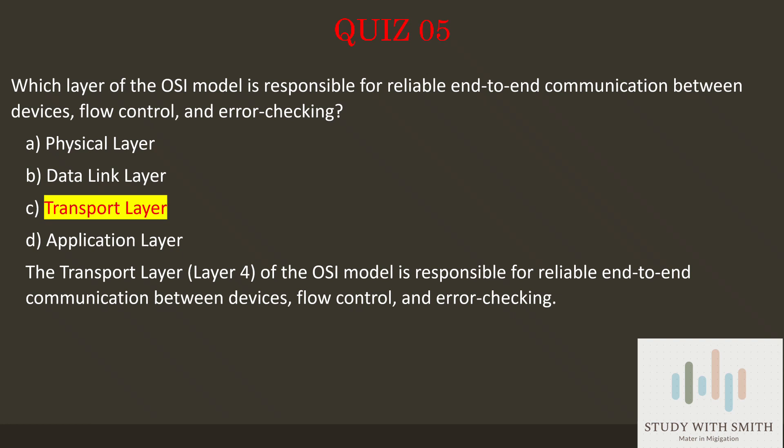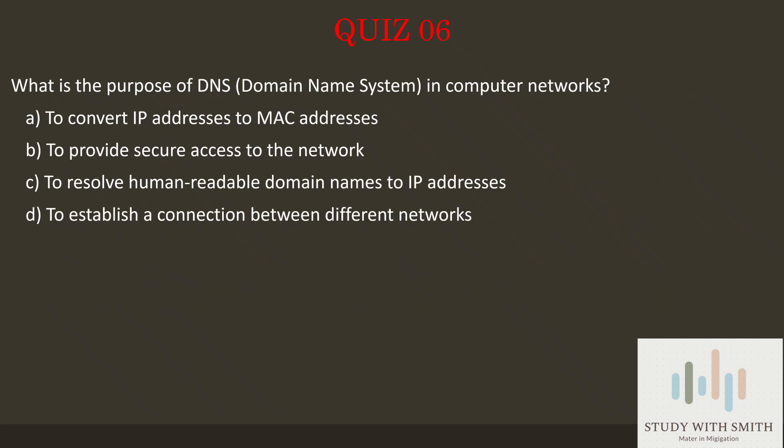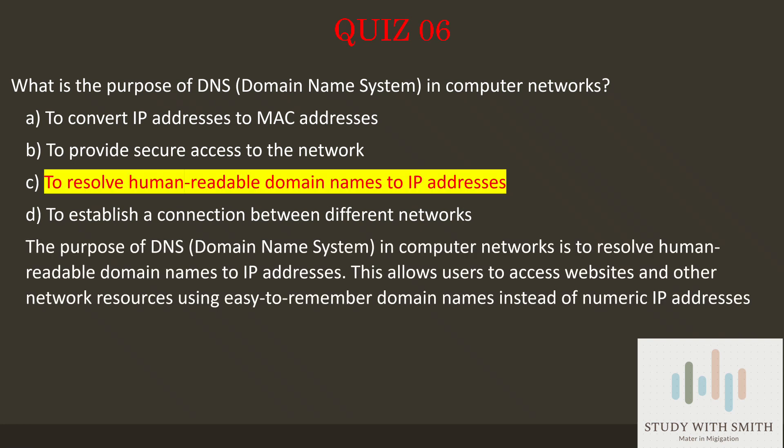Question 6: What is the purpose of DNS (Domain Name System) in computer networks? Pause the video now to select the best answer. The answer is C — to resolve human-readable domain names to IP addresses. DNS allows users to access websites and other network resources using easy-to-remember domain names instead of numeric IP addresses.